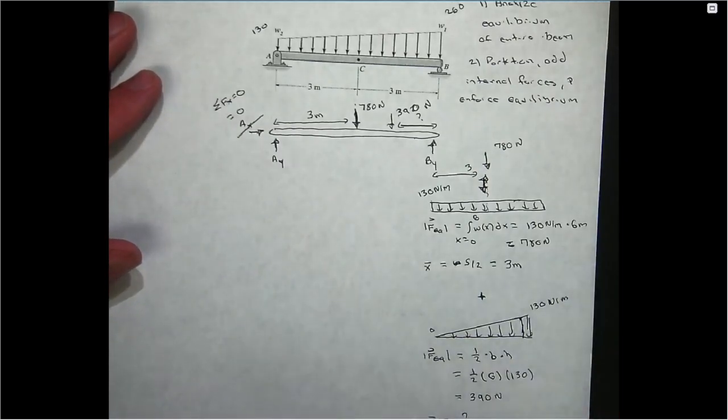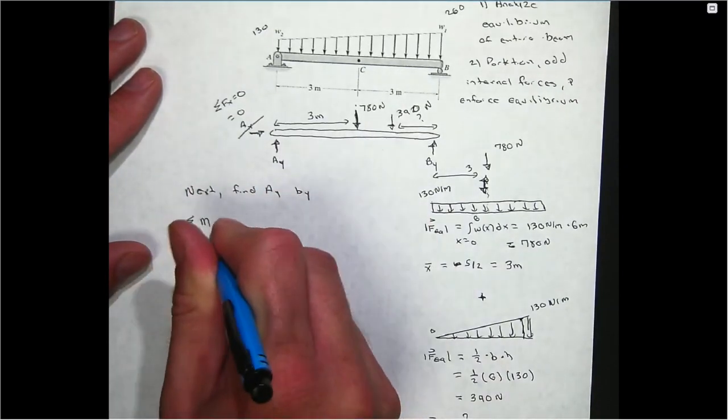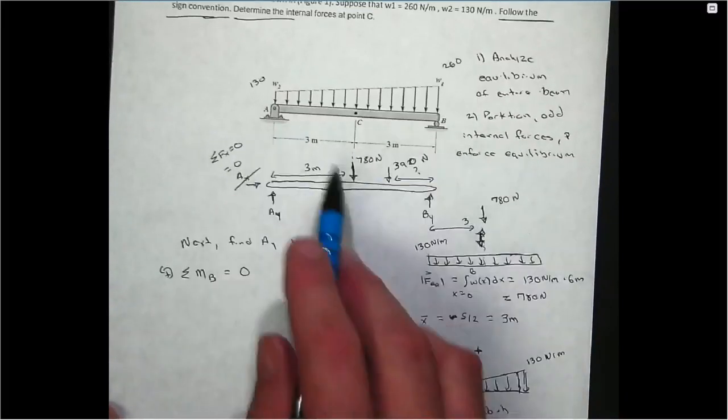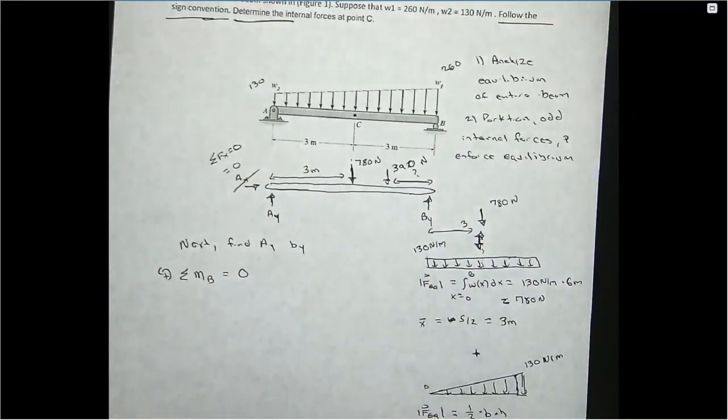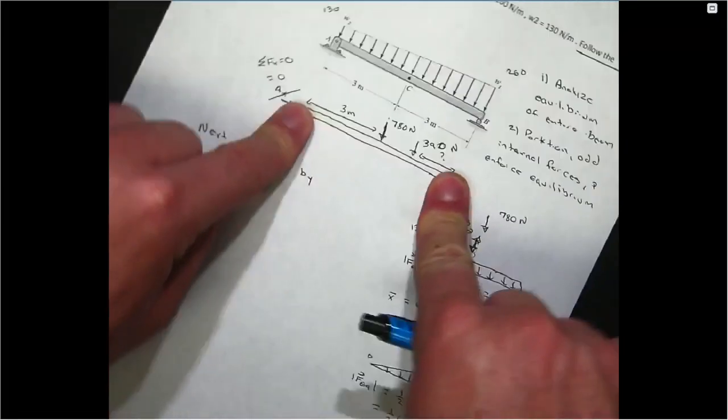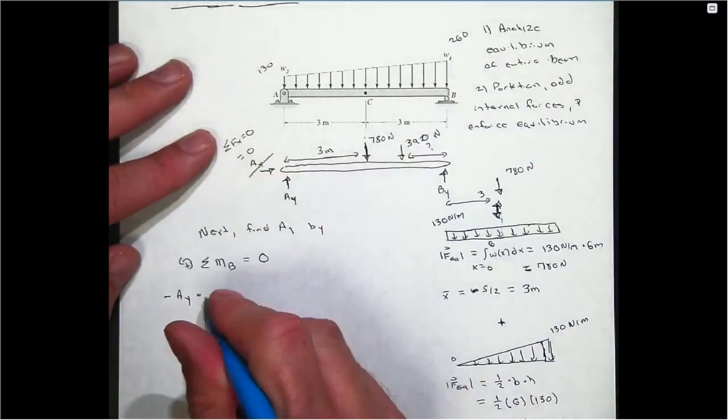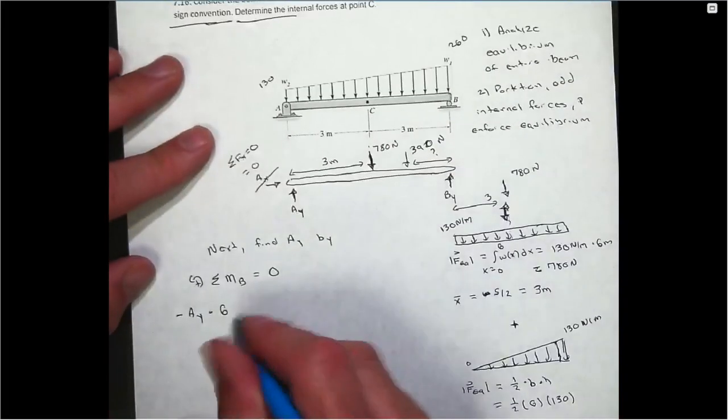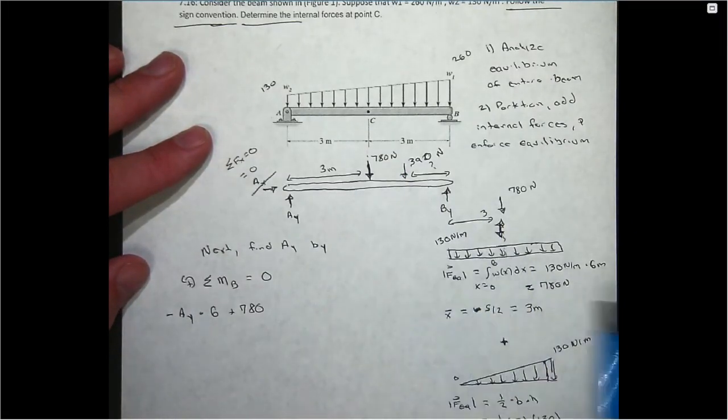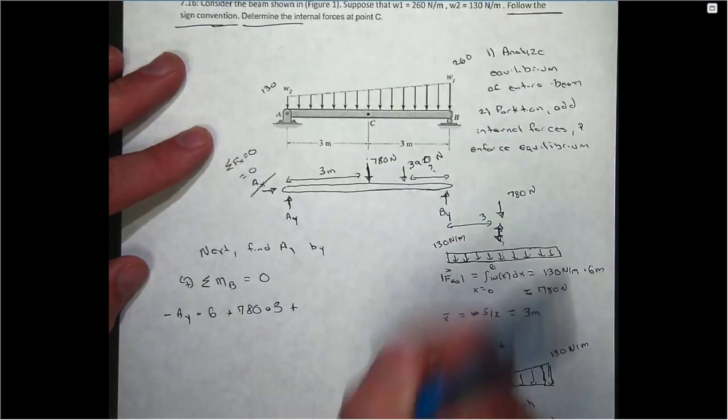Once you have this set up for the equilibrium of the entire body, what I would do is find AY by summing all moments about point B. You might ask, why did I pick AY? I want all the forces at point C. So I technically only need to get one of the two reactions. Because once I have one of the two reactions, I can go right away and draw the free body diagram of my segmented beam. In terms of the rotation that's induced about point B, I will have a clockwise rotation associated with AY. That'll be minus AY times the perpendicular distance, in that case is the entire span of the beam, or six meters.